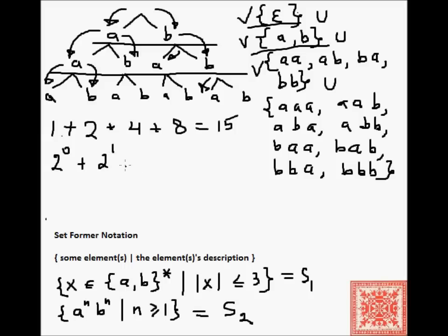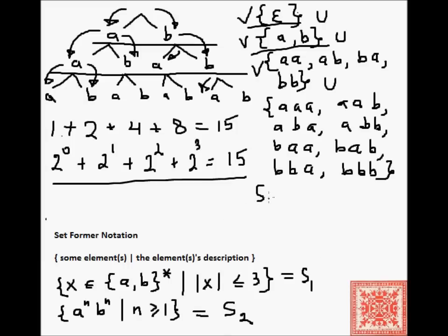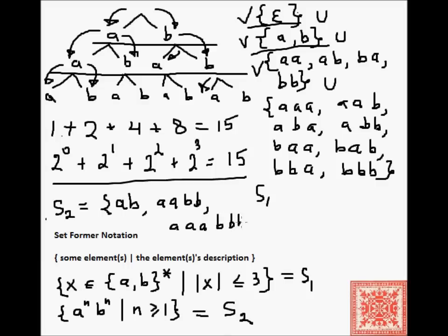It's a nice geometric series: 2^0 strings of length 0, 2^1 strings of length 1, 2^2 strings of length 2, and 2^3 strings of length 3. S1 is a finite set because we have a strict upper bound on the length of strings. S2, on the other hand, is an infinite set, because n is specified to be greater than or equal to 1, and there are infinitely many natural numbers greater than or equal to 1.